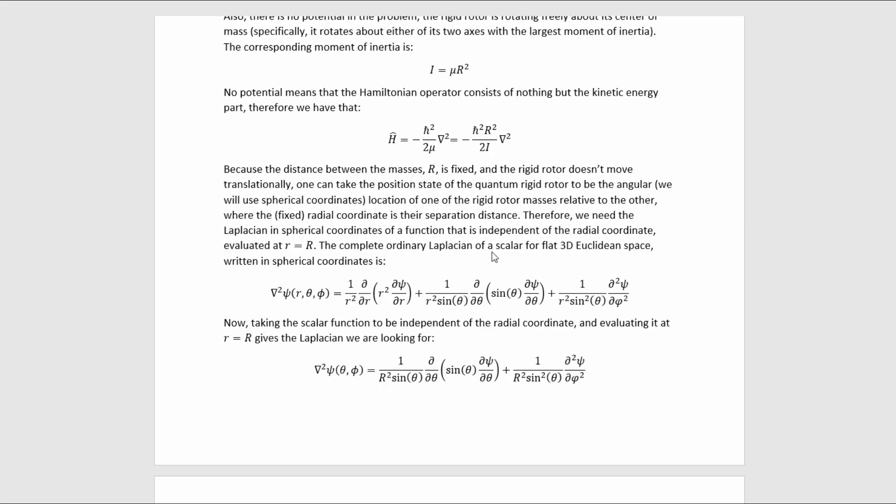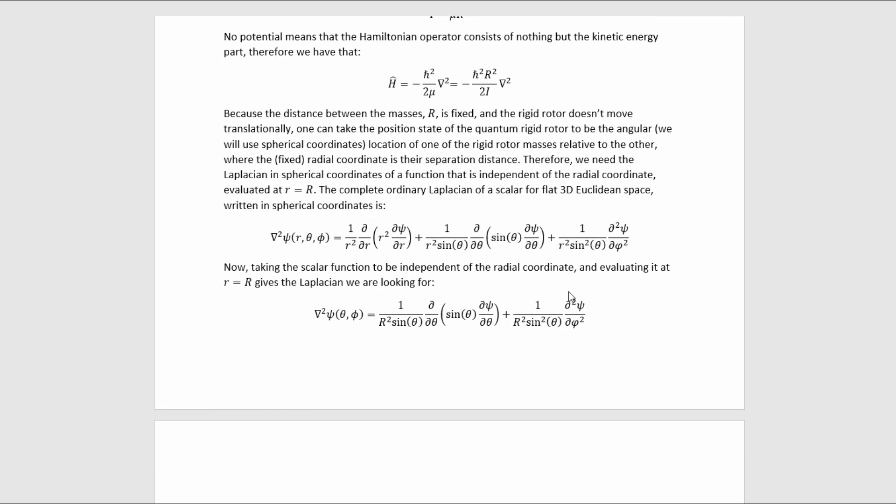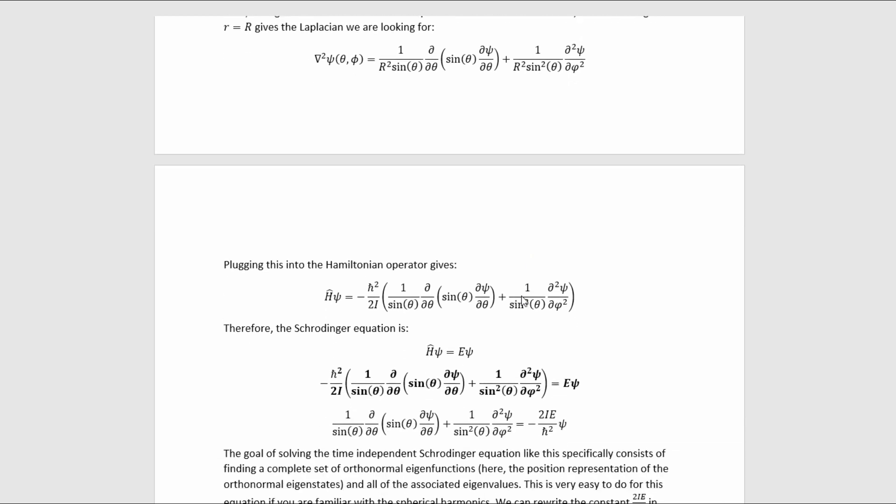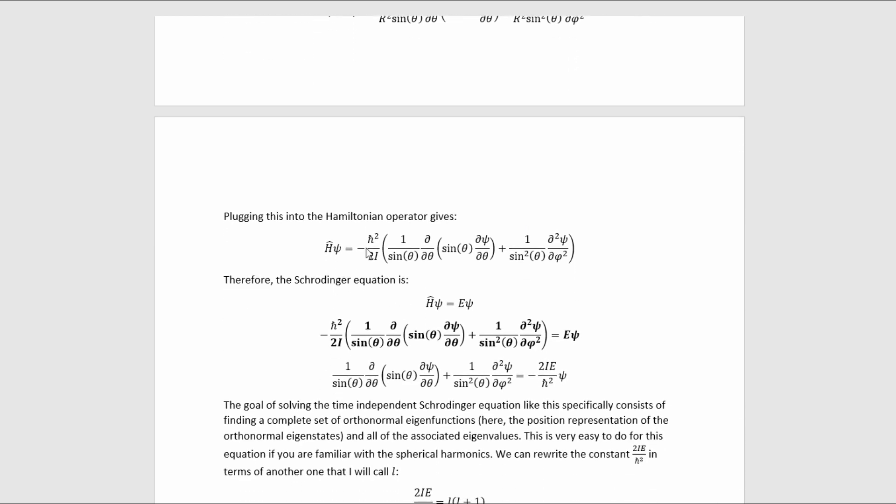The complete ordinary Laplacian of a scalar in 3D Euclidean flat space written in spherical coordinates is given by this formula. Now, taking the scalar function to be independent of the radial coordinate and evaluating it at r equals the separation distance gives the Laplacian we're looking for, which is this one. Plugging this into the Hamiltonian operator gives us this result for the Hamiltonian.